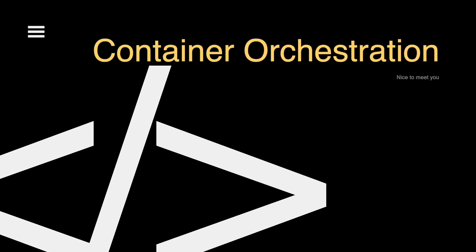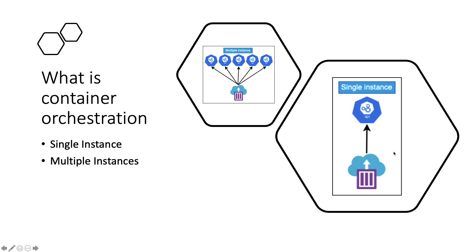With Docker alone, we can run a single instance of an image using the docker run command. When user numbers increase and a single instance isn't enough, we can run the docker run command multiple times, resulting in multiple instances running simultaneously on a single Docker host. This requires keeping an eye on all running containers and their state — if one fails, we need to re-initiate that container using docker run again, and if one becomes unresponsive, we need to shut it down and re-run it from the image.